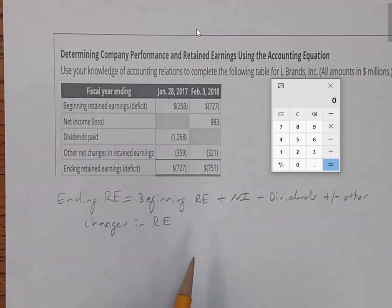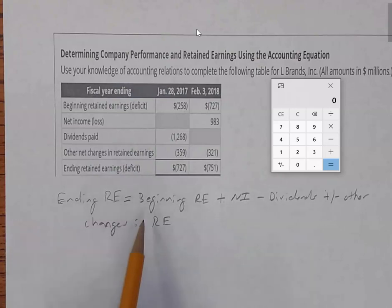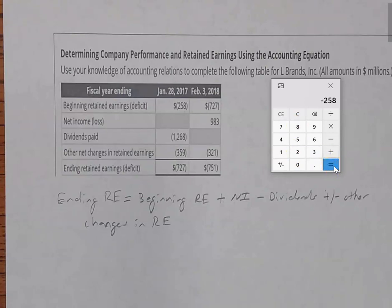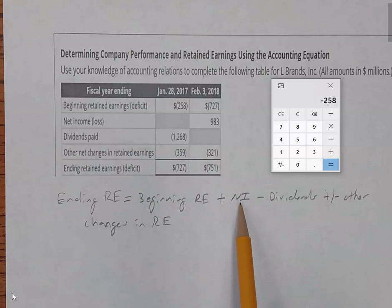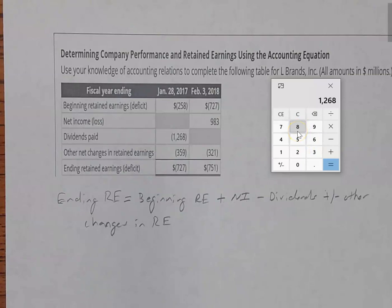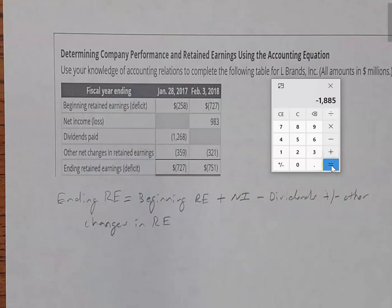For the first column, we apply the formula. Beginning retained earnings is negative 258, so I type in −258 and hit equals to get the negative sign. Net income is what we're solving for, so we skip it. We then subtract dividends of 1,268, and the other net changes in retained earnings are also negative 359. That brings us to negative 1,885.